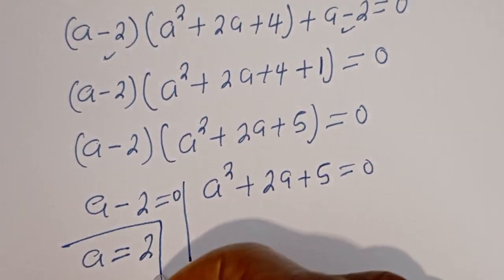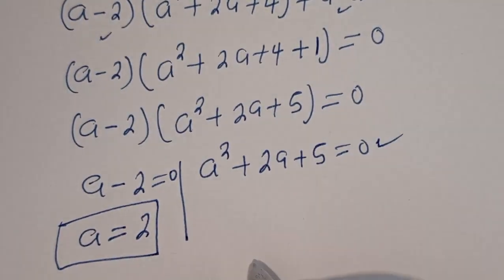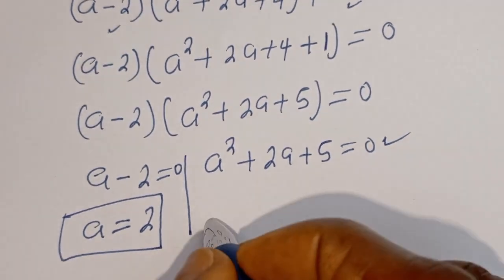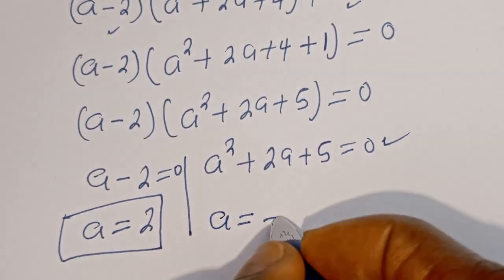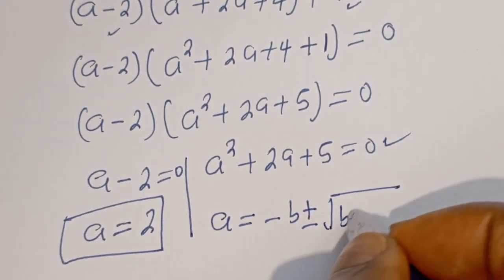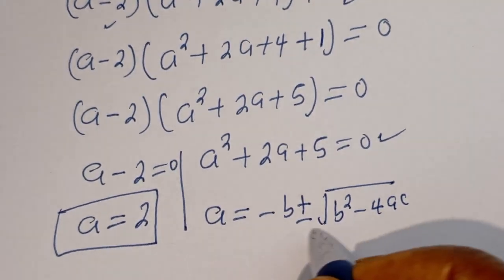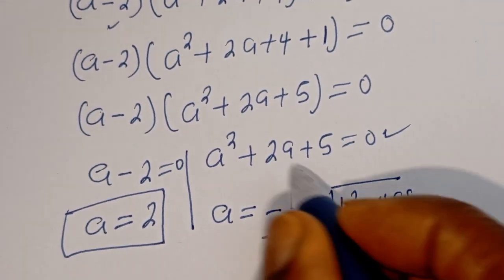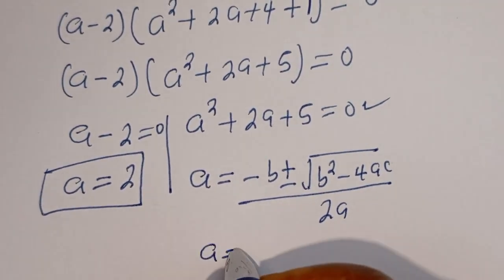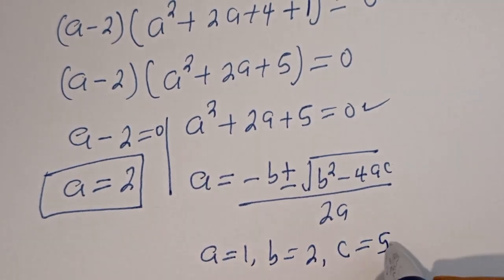From the first case, A is equal to 2 — this is the real value. The second case is a quadratic equation, which can be solved using the quadratic formula: A is equal to minus B plus or minus square root of B squared minus 4AC, divided by 2A. From this equation, a equals 1, B equals 2, and C equals 5.